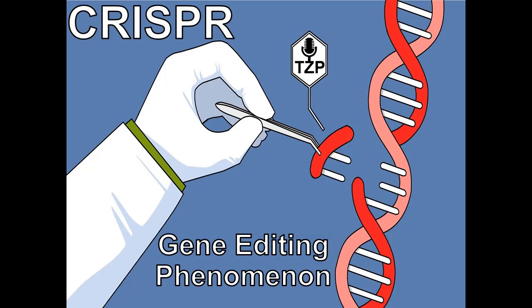These organisms are archaea and bacteria. Archaea and bacteria use CRISPR to detect and destroy DNA from viruses known as bacteriophages. CRISPR manages to do this through the interaction of nucleotide repeats.